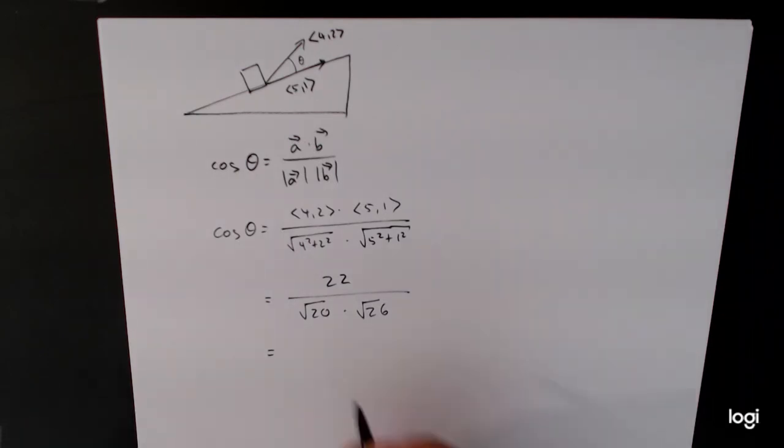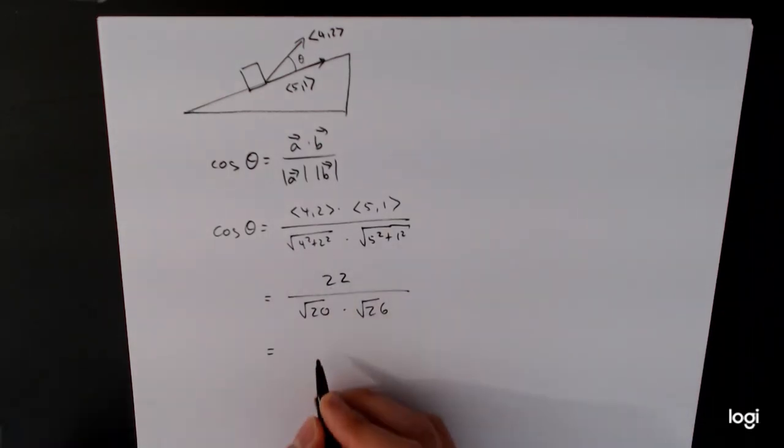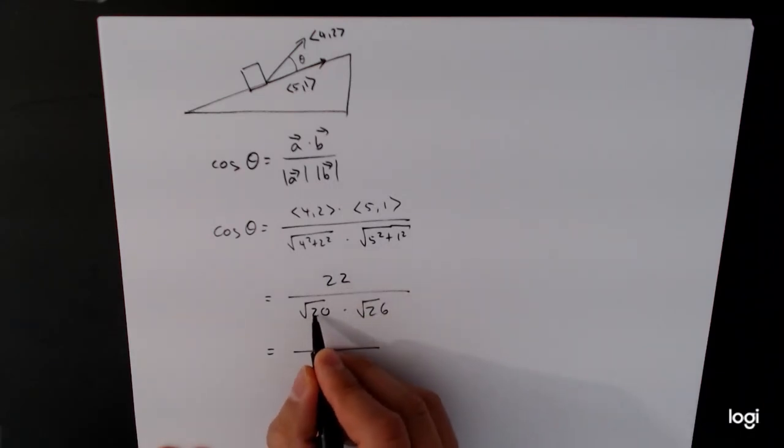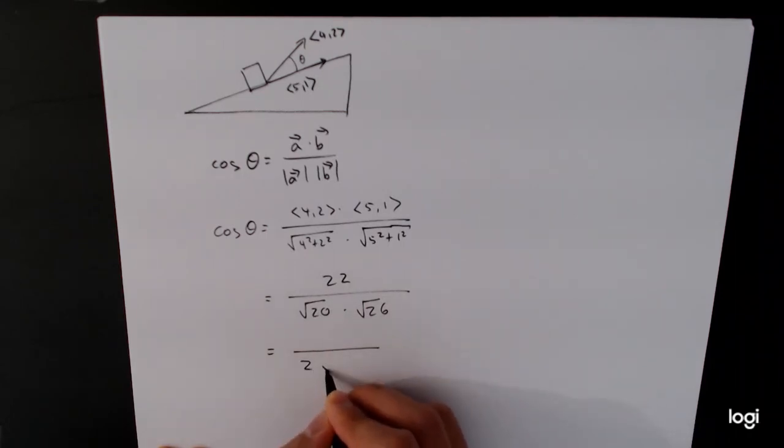Now we can simplify this if we wanted to get an exact answer here. Square root of 20, so 20 is 4 times 5. So square root of 4, square root of 5, square root of 4 is 2, so 2 root 5 times root 26. Those will cancel out. So we got 11 over square root of 130.